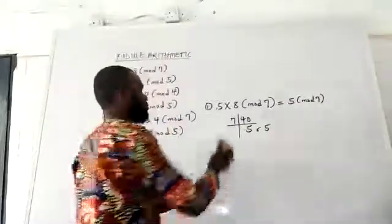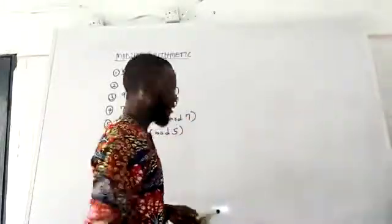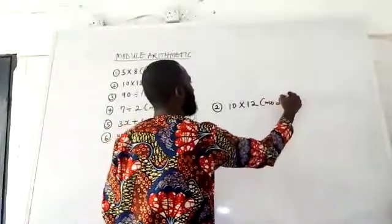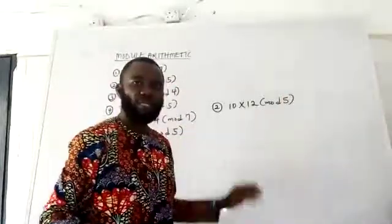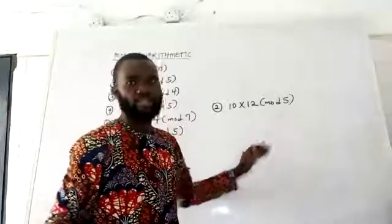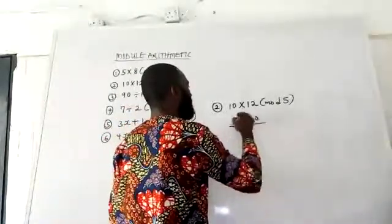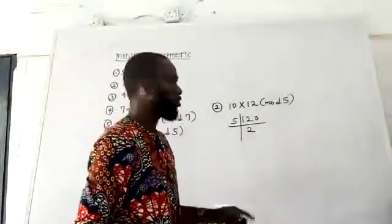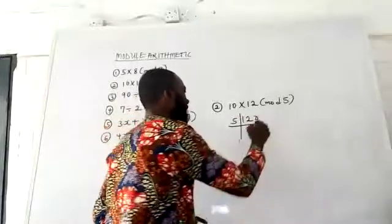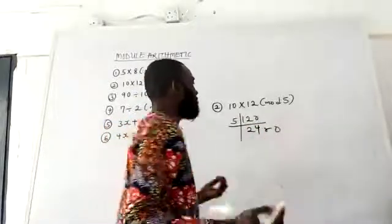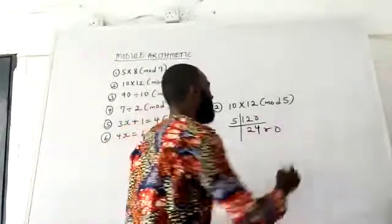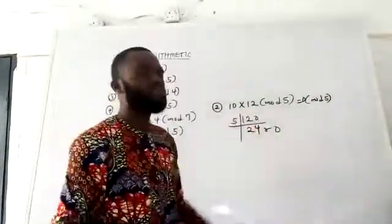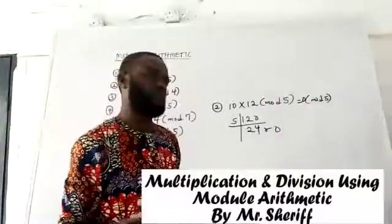Let's move on to number 2. I have 10 multiplied by 12 in mod 5. 10 multiplied by 12 is obviously 120. Then I'll use my modulus. 5 into 120: 5 into 12 gives 2 remainder 2, so that brings down to 20. 5 into 20 gives 4, remainder 0. So I'm not left with any remainder, meaning 0 becomes my answer. So 10 multiplied by 12 in mod 5 gives 0 in mod 5.